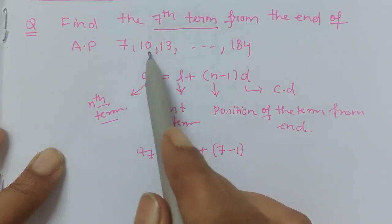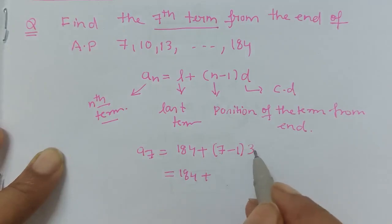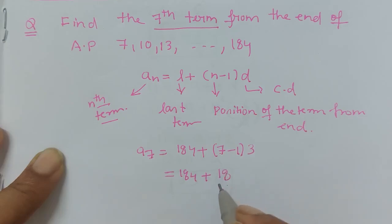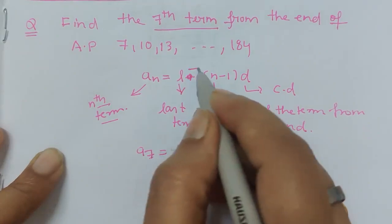13 minus 10 is 3. Now it's simple calculation: 184 plus 7 minus 1 is 6, 6 into 3 is 18. Sorry, here we have minus sign.